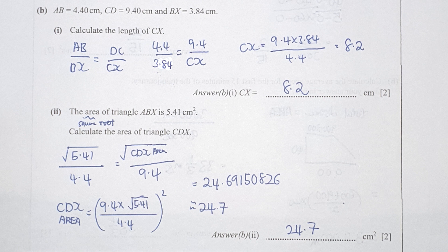To calculate the area of triangle CDX using the comparison method in the mathematically similar topic, the area ratio is set up as the square root of 5.41 over 4.4 equals the square root of the area over 9.4. After rearrangement, the final result is 24.7.